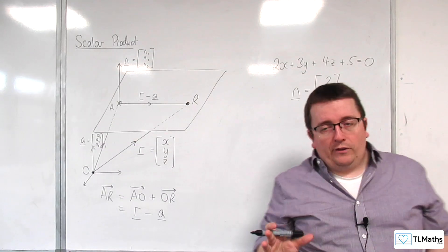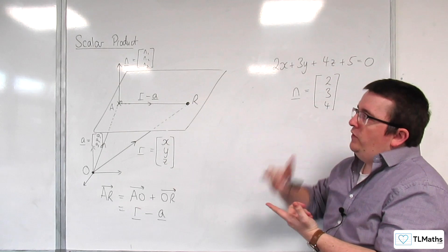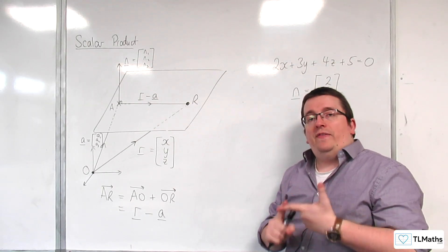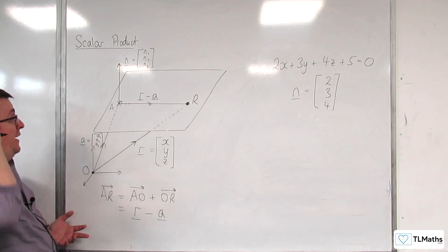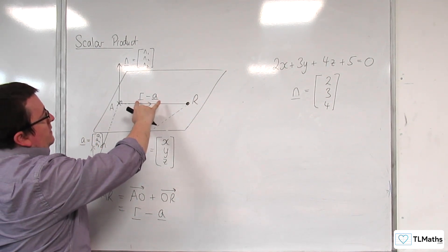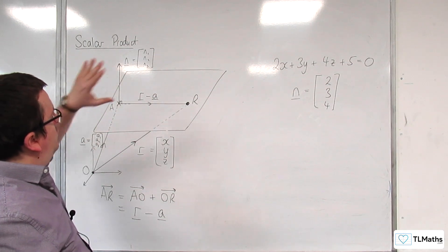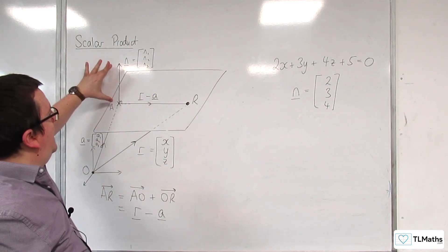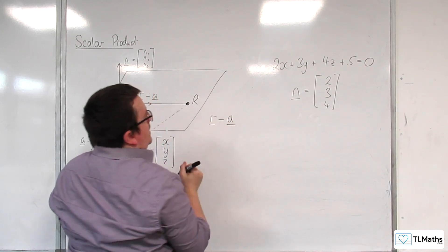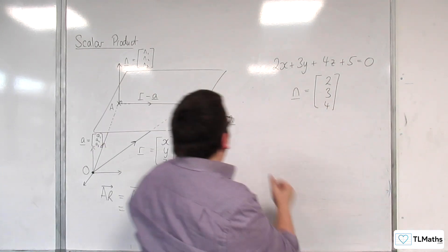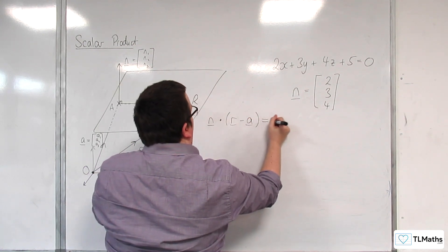Something coming up in the next section on the scalar product: if the scalar product of two vectors is zero, they are perpendicular — and vice versa; it's an if-and-only-if statement. Since r − a is a vector lying on the plane, and the normal vector N is perpendicular to any vector on the plane, we must have N · (r − a) = 0.